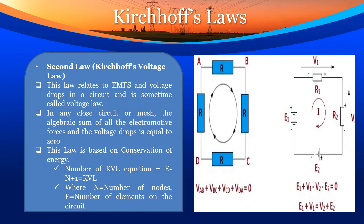Second law: Kirchhoff's voltage law. This law relates to EMFs and voltage drops in a circuit and is sometimes called the voltage law. In any closed circuit or mesh, the algebraic sum of all the electromotive forces and voltage drops is equal to zero. This law is based on conservation of energy. The number of KVL equations is equal to E minus N plus 1, where N is the number of nodes and E is the number of elements in the circuit.